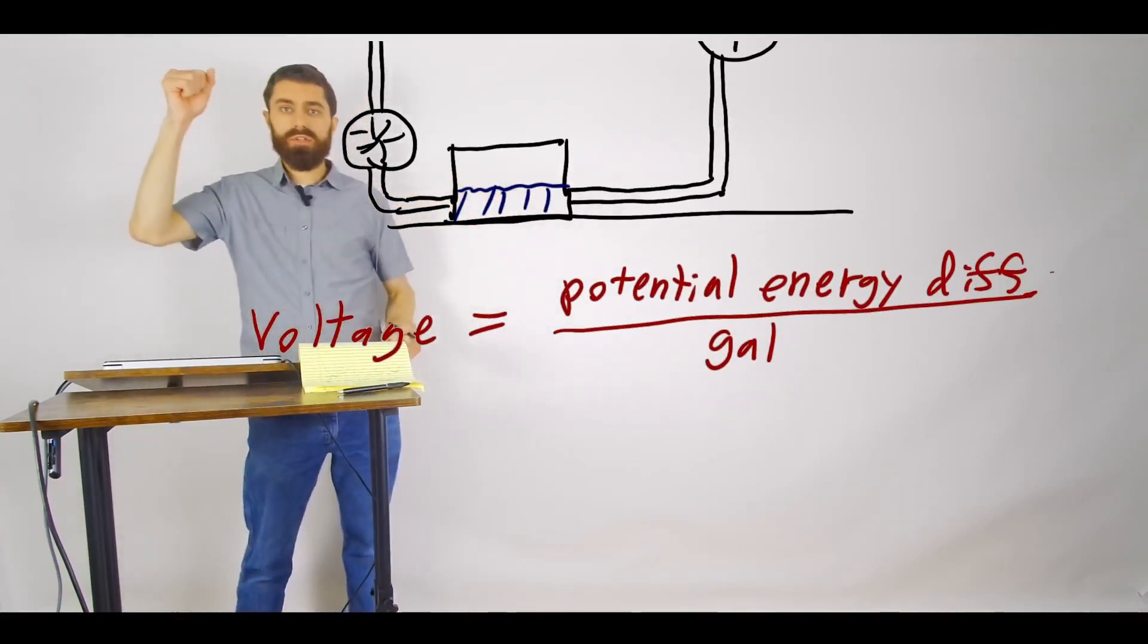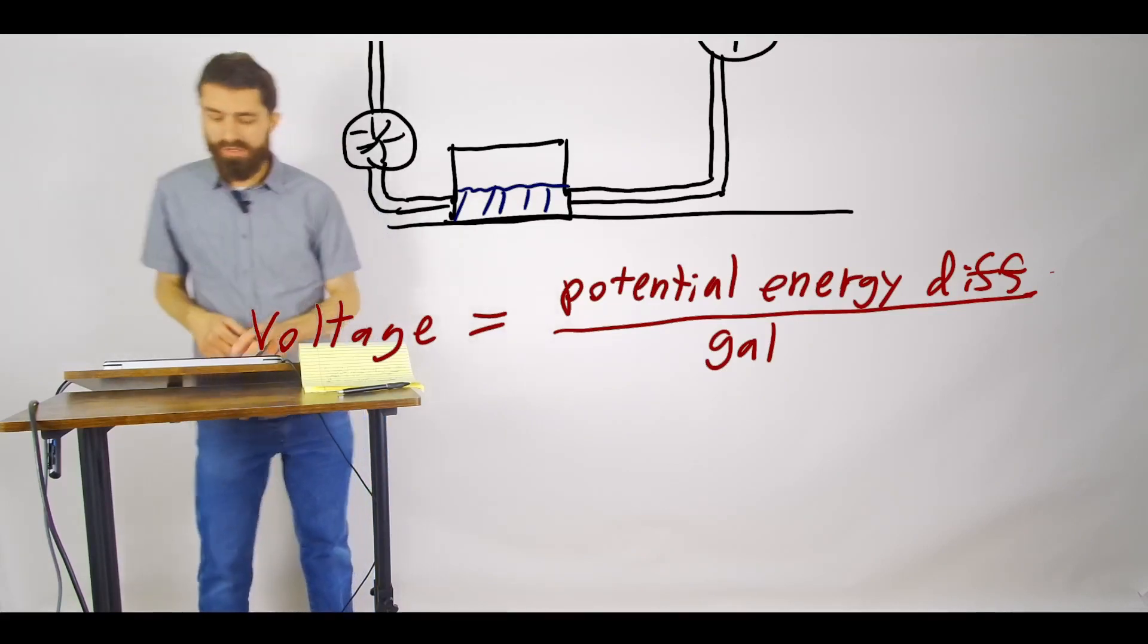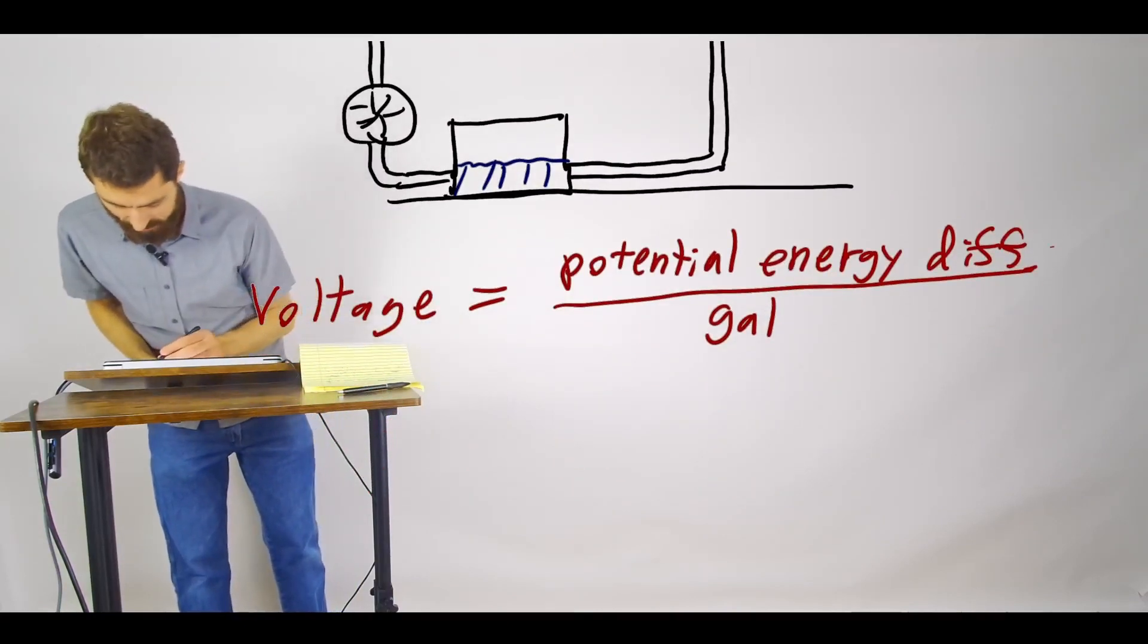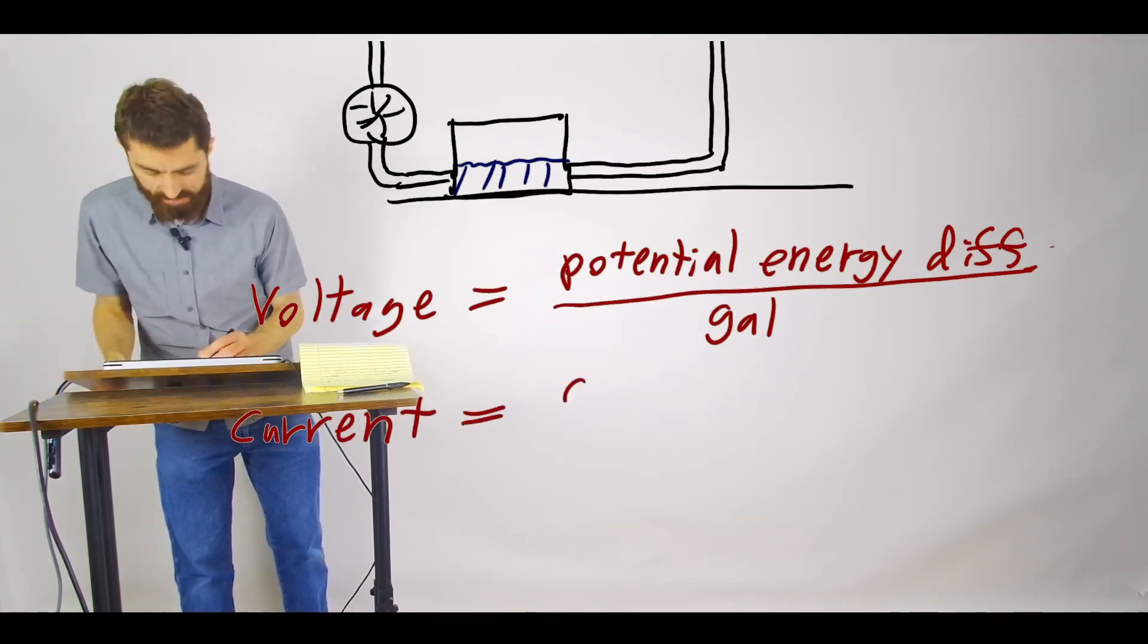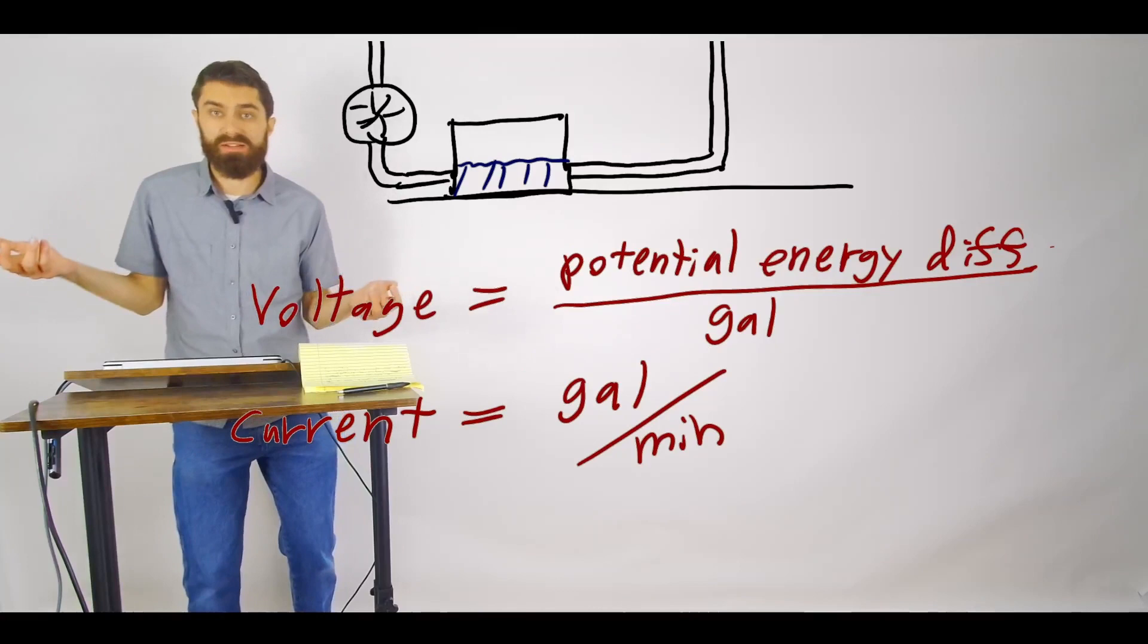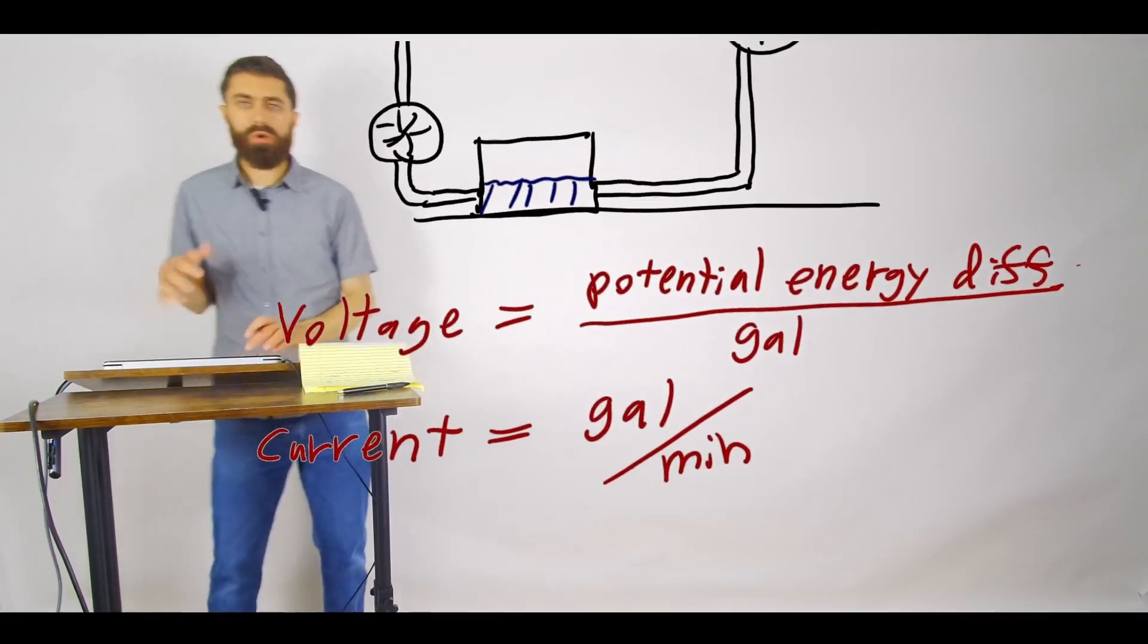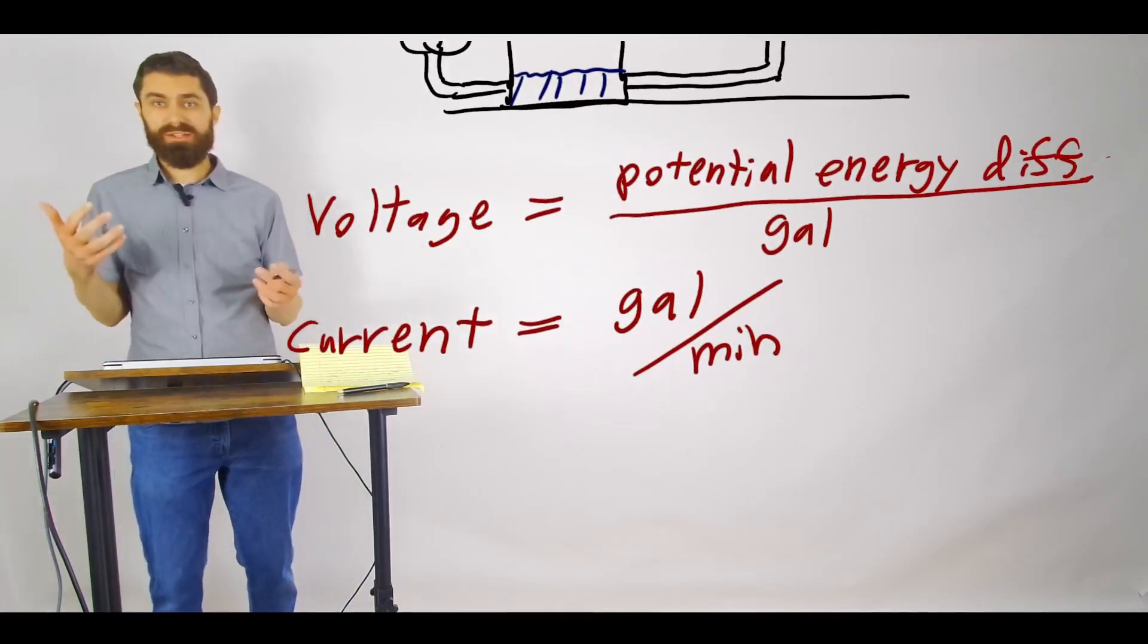And the greater that voltage is, the faster the water is going to flow, right? So we could call that current. And that's basically defined as the number of gallons that flow by per unit time, I'll just say per minute. So those are two really important quantities that you will see show up in circuits.